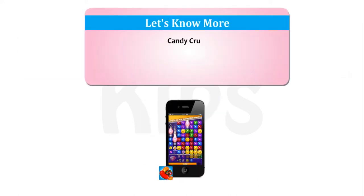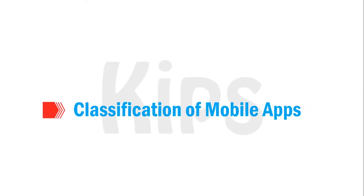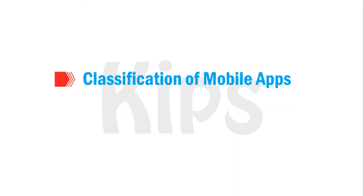Let's know more about Candy Crush. In this game, players complete levels by swapping colored pieces of candy on a game board. Now let's understand the classification of mobile apps — mobile apps can be further classified as native apps or hybrid apps.